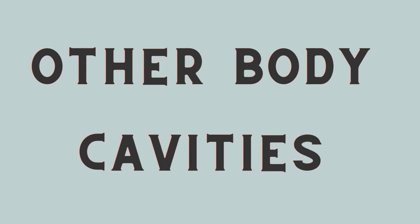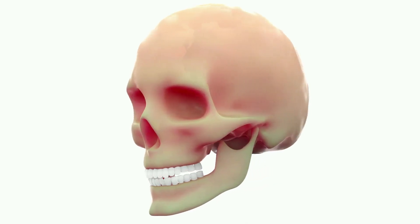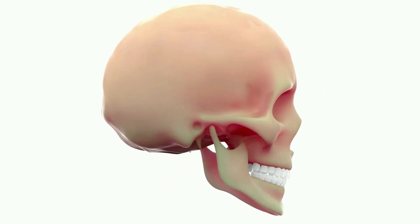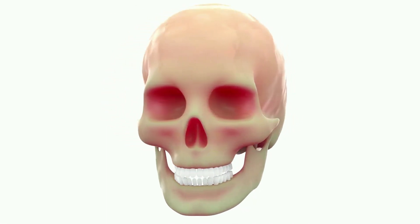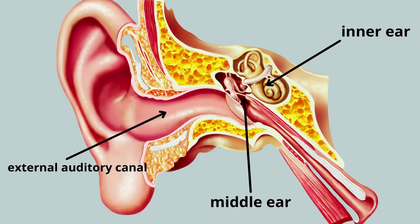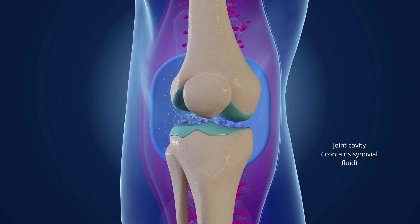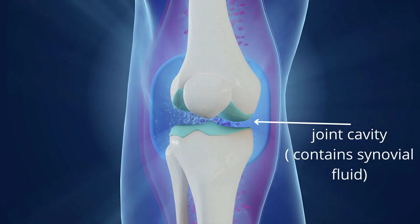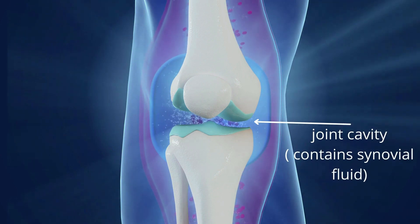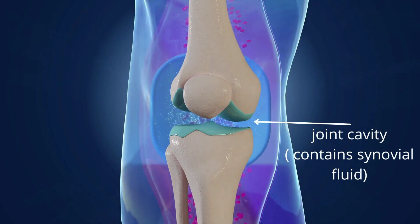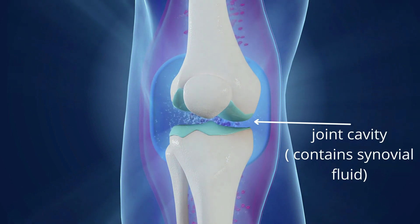We have some other body cavities, like the oral cavity, or the mouth, that houses the tongue and the teeth. The nasal cavity houses the nose, and the orbital cavities house the eyeballs. We also have the middle ear cavities, which contain small bones in the middle ear. And finally, the synovial cavities — a synovial cavity is a joint cavity found in between the segments of the bone and the articular cartilage. The synovial fluid is located within a joint cavity of a synovial joint.